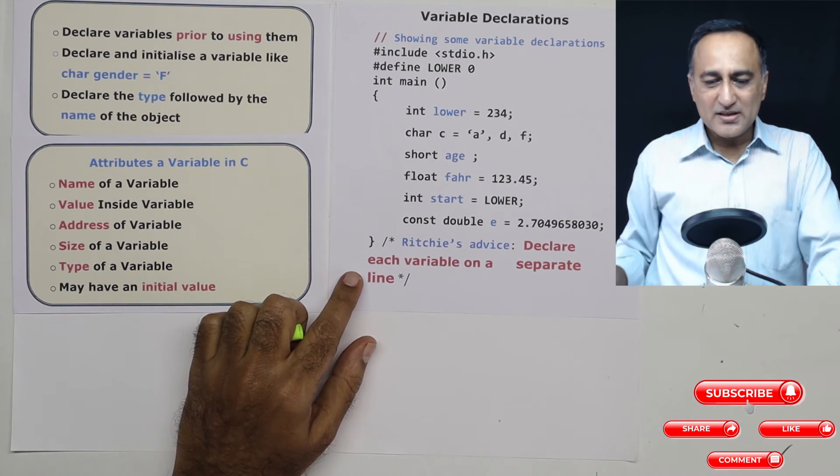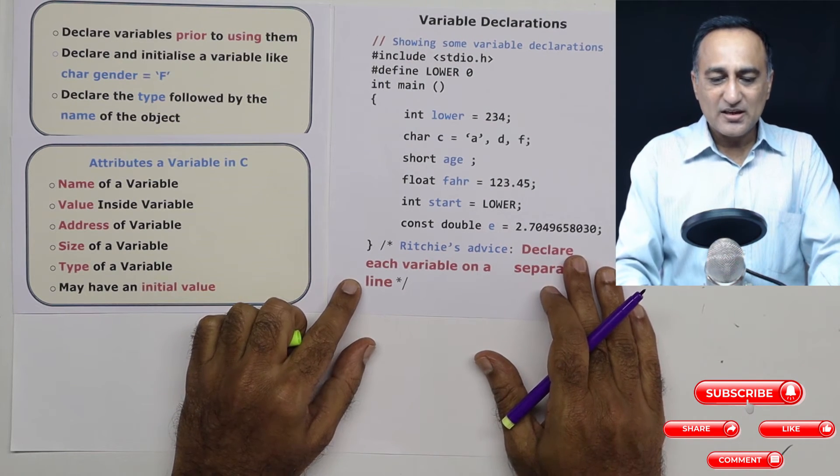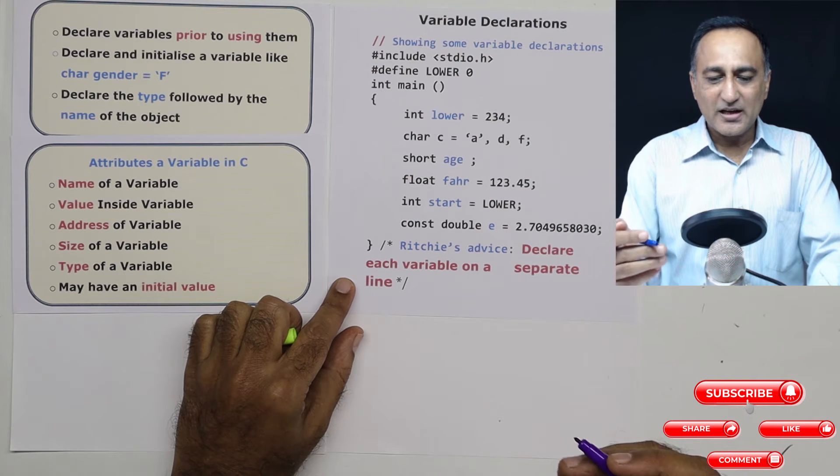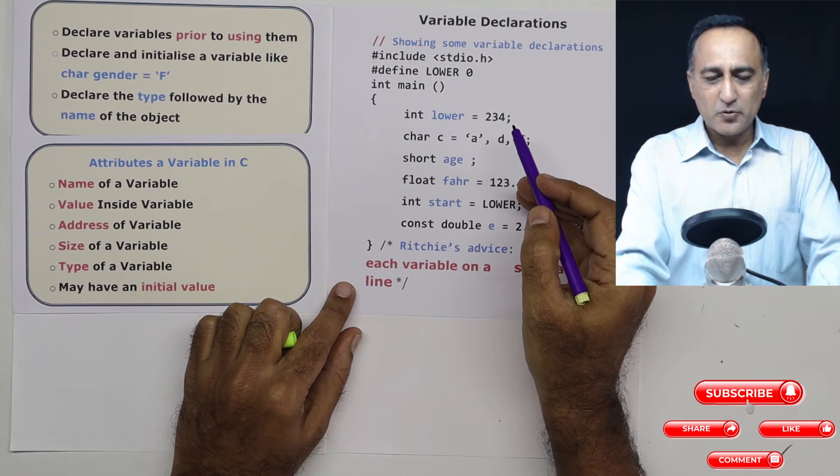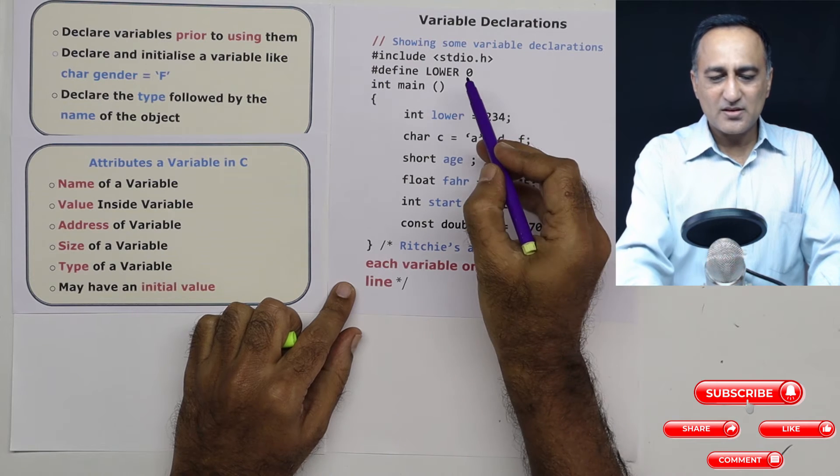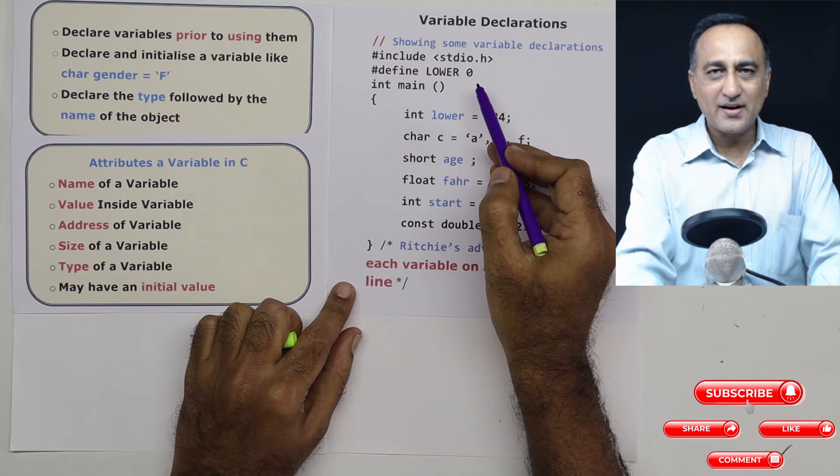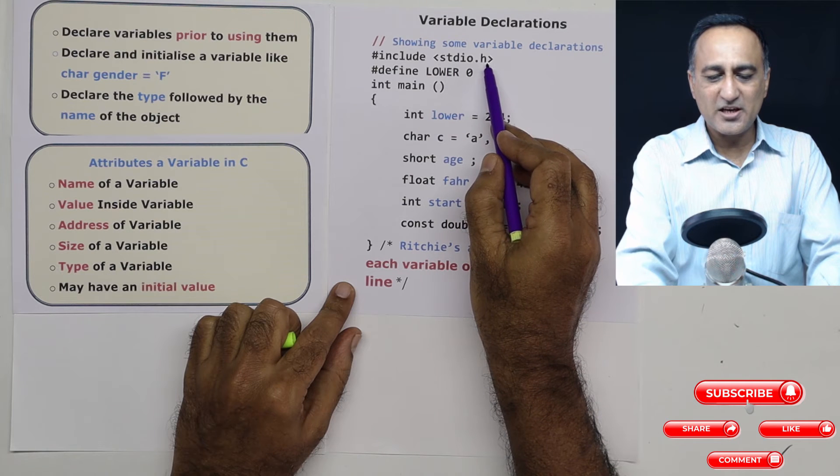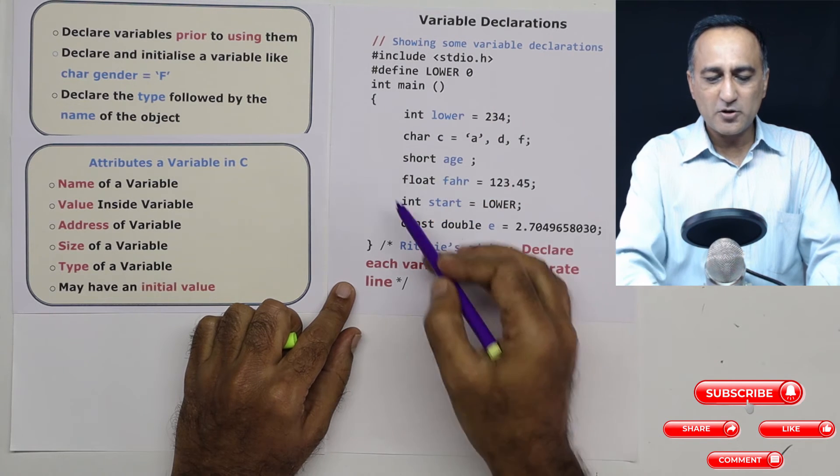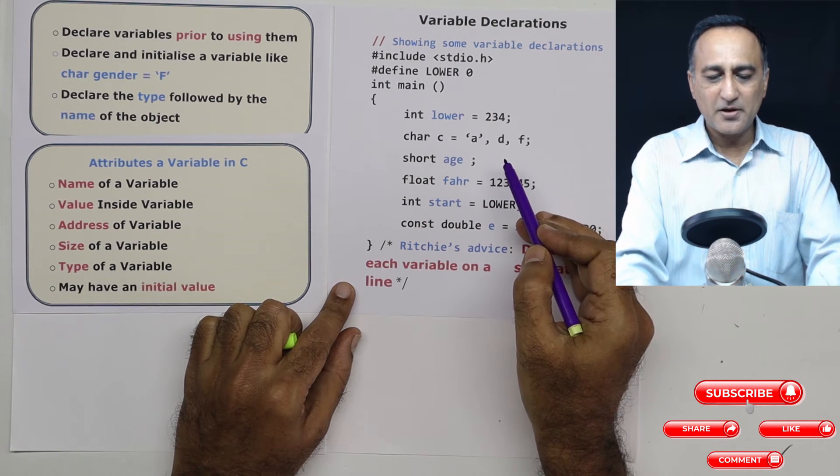Now let's try to understand a little more about variable declarations by showing different types of variable declaration. This is a simple C program doing almost nothing, just showing you how variables are declared in the right manner. The first thing is I've included a header file called stdio.h, although not required here because I'm not doing any printing here.